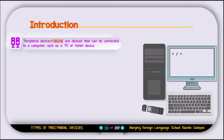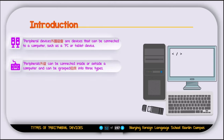For example, we have the mouse, keyboard, microphone, speakers — all those devices we call peripheral devices. Peripheral devices can be connected inside or outside of a computer and can be grouped into three types. The three types are input devices, output devices, and storage devices.